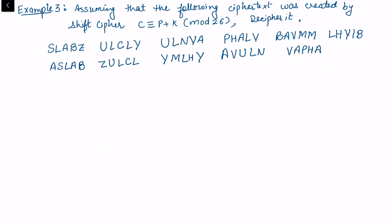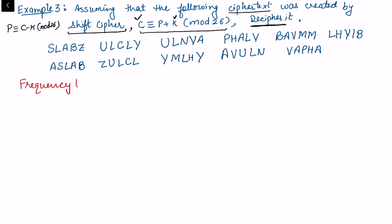In this third example, we are given a cipher text created using the shift cipher, but the key is not given. We know C ≡ (P + k) mod 26 and we have access to C, but not to k. If we know k, deciphering is easy: P ≡ (C − k) mod 26. Since the key is unknown, we use the frequency analysis table to find it.